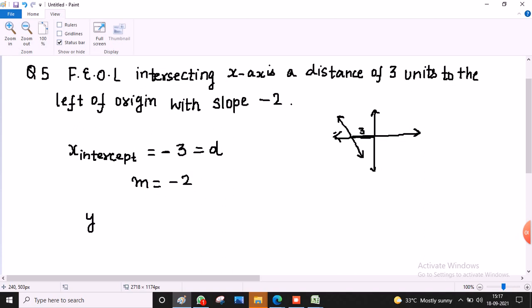y is equal to m times x minus d. So y is equal to m, m is minus 2, x minus d. D's value is minus 3, then we add minus 3, so x plus 3.